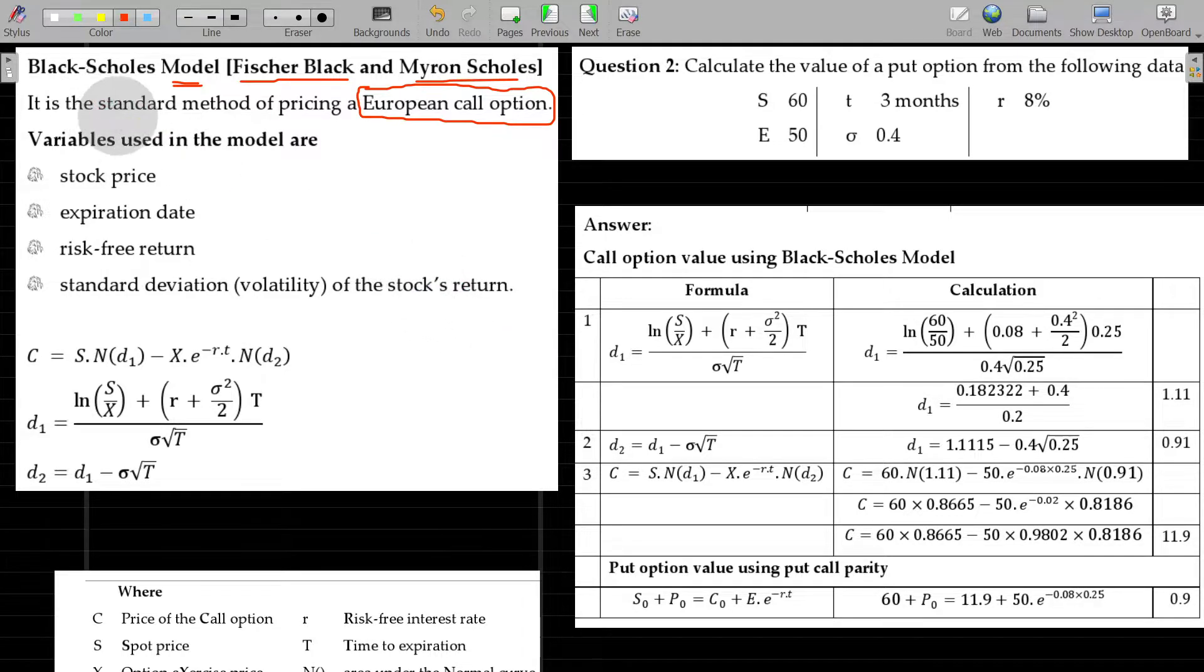To determine the call option value: current stock price, expiration period. More the duration, more the value. You can look at the rate of return, the standard deviation, the stock volatility. The more volatile in the future, the more risky. These are the logics you have to understand.